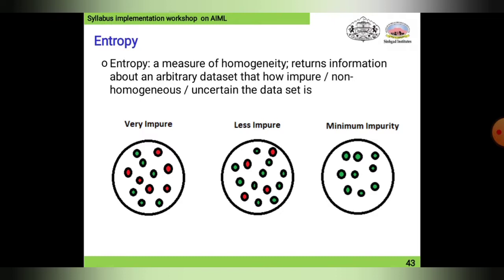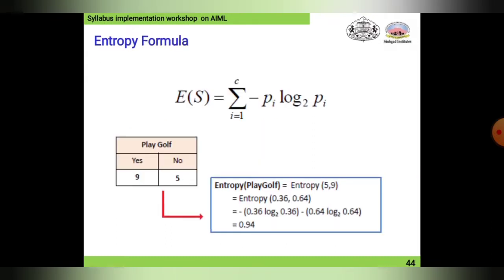The red dots try to cut through the green dots and vice versa, making the dataset very impure. A less impure case would be where green dots are somewhat connected to each other and red dots are spread apart. The minimum impurity case is where only green dots are present, though some impurity may still exist due to spacing between data points. This is how entropy works in machine learning.